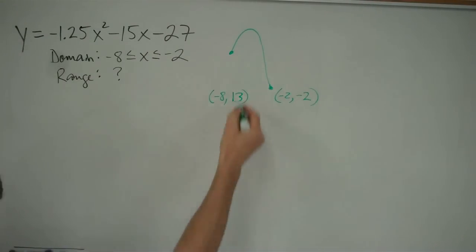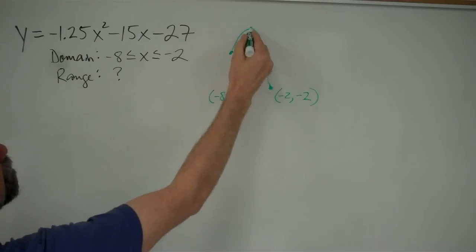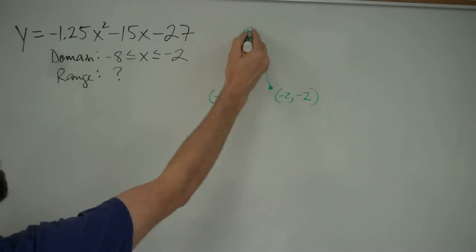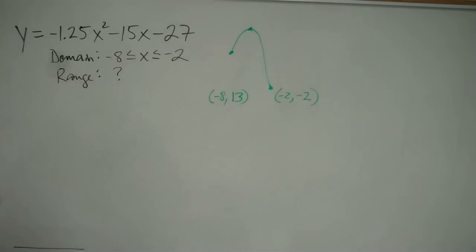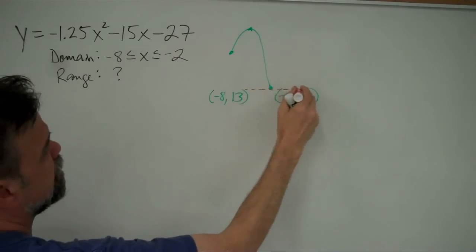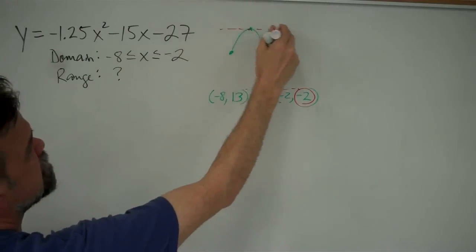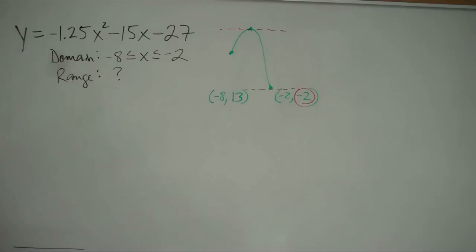And I'm still assuming that my vertex of this parabola is somewhere in between negative 8 and negative 2. That might not be the case. But assuming it is, it's going to look like that. So to find the range of this, we look at our lowest point, that is negative 2, and our highest point, which is probably the vertex. So we've got to find where that vertex is.